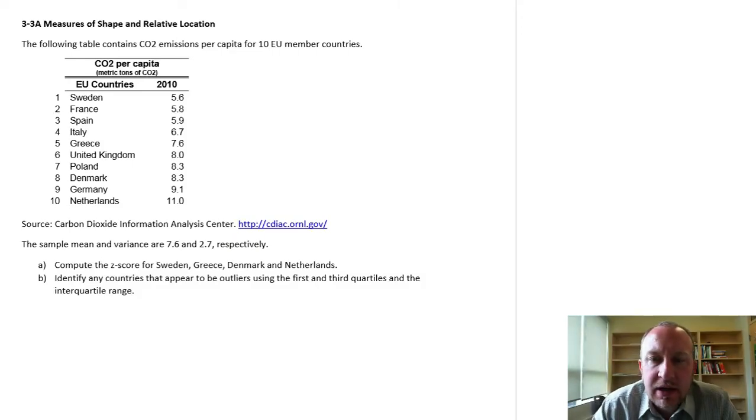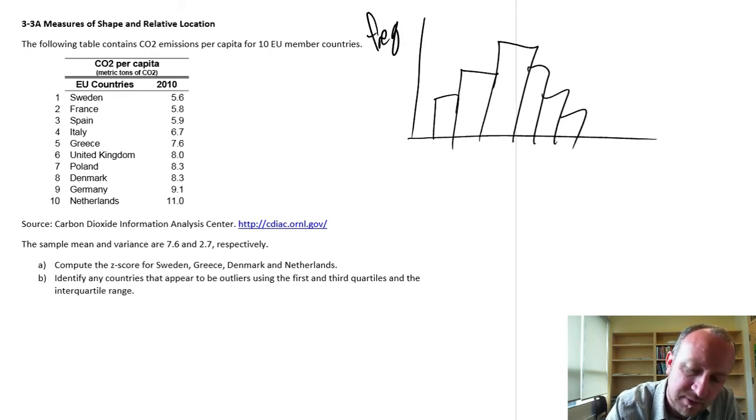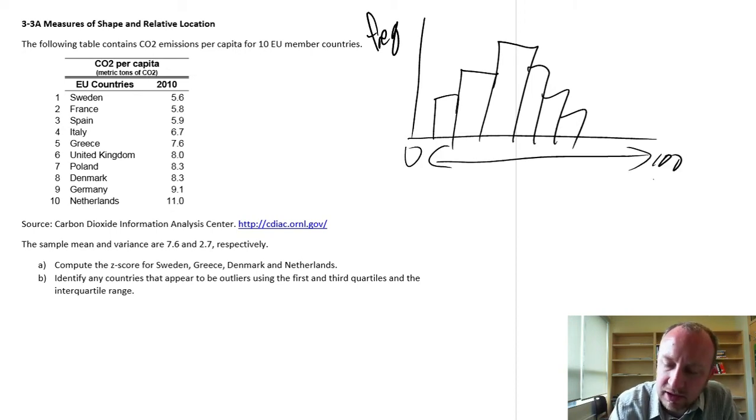Hello and welcome back. In this exercise, we're going to begin a discussion on different measures of shape and relative location. So when we started talking about shape, we're talking about the shape of a distribution. You may recall if we looked at those histograms, there's kind of a bar graph with frequency on the y-axis and some range of values, 0 to 100 or something, on that x-axis.